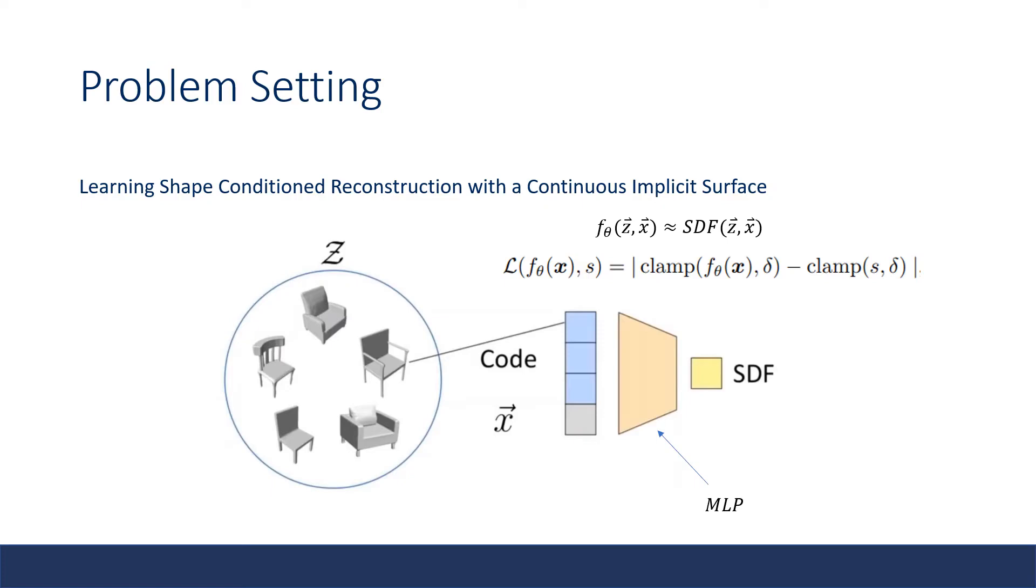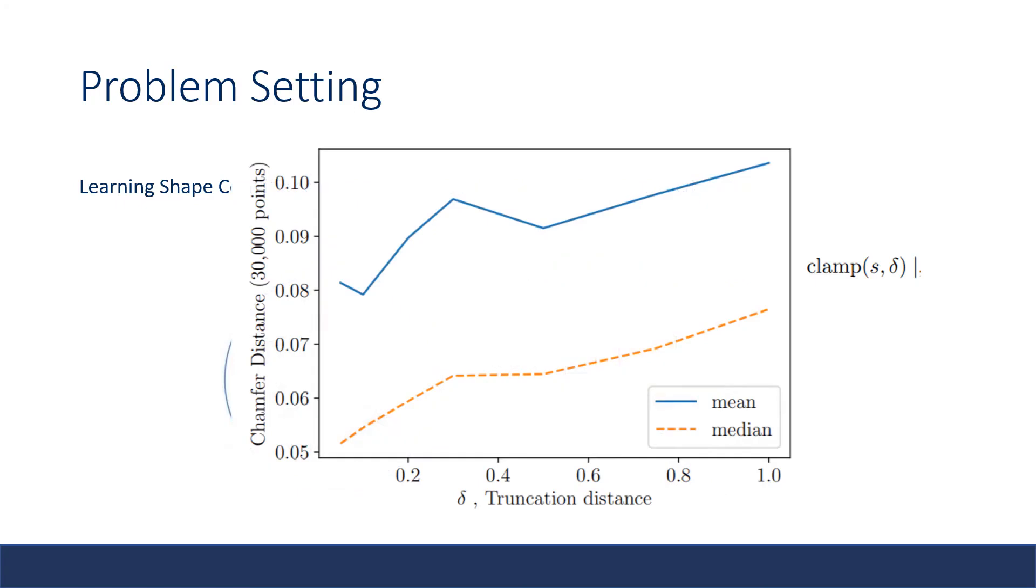In addition, for shape reconstruction, we only care about the surface boundary, so we want the network to focus its prediction near the zero level set. Therefore, they further clip the SDF value with a small threshold. The author empirically showed that with a smaller truncation distance, they achieve better reconstruction quality.